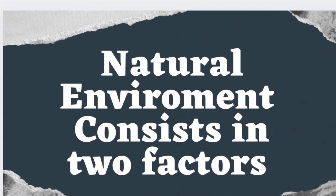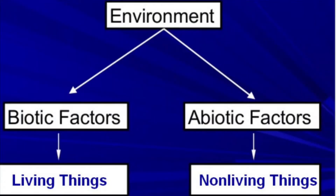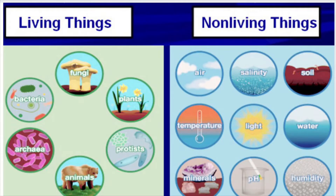The natural environment consists of two factors: biotic factors and abiotic factors. Biotic factors refer to living beings — plants and animals, bacteria, fungi, and more. Abiotic factors refer to non-living elements such as pH, air, soil, light, water, temperature, humidity, and minerals.